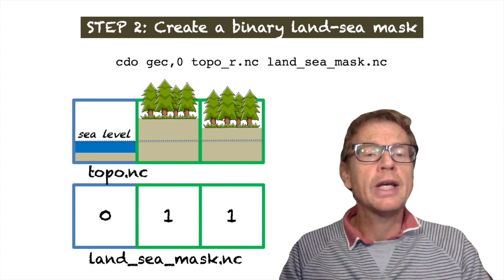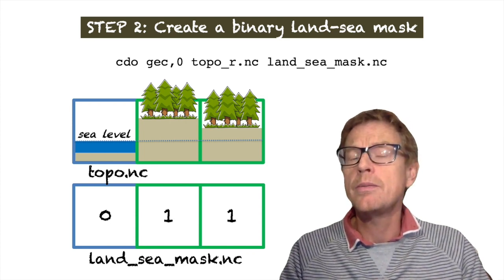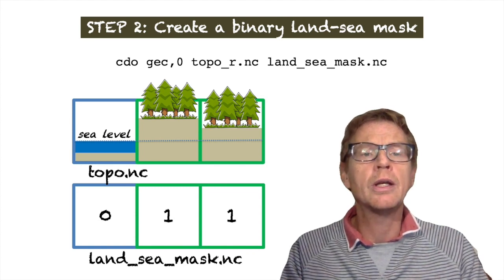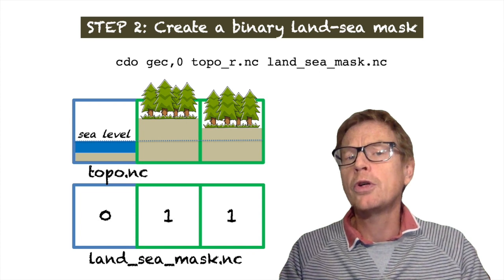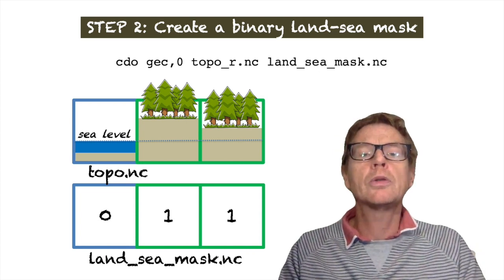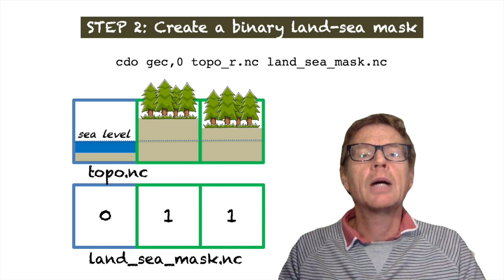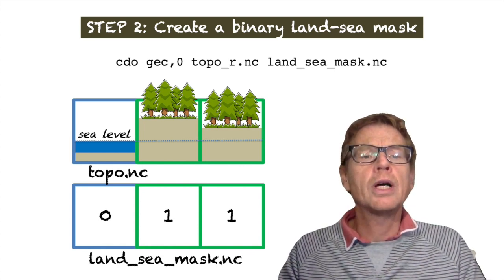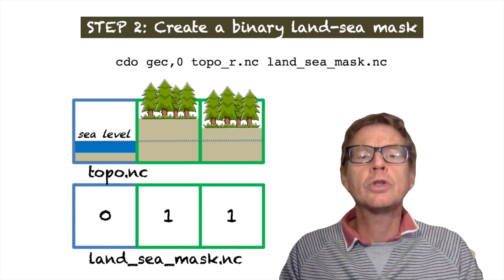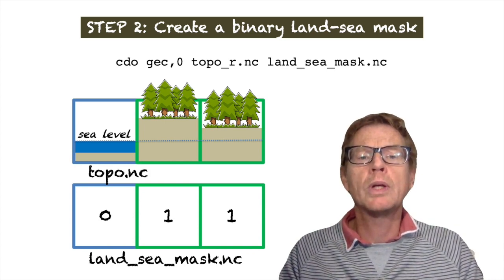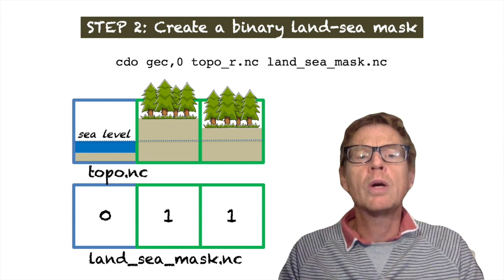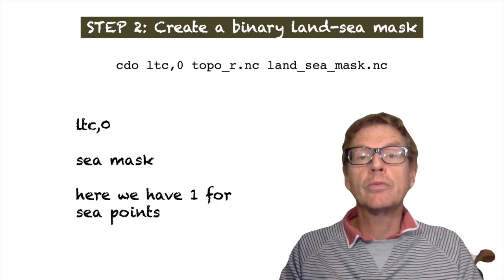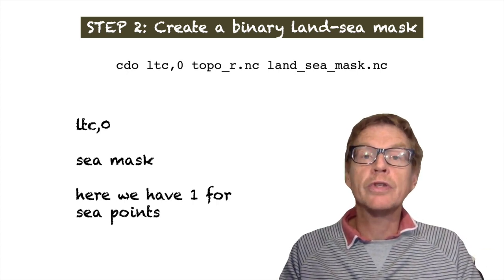Now what we need to do then is we need to convert this into a mask. And we can do that using the logical commands that we've also seen in a previous video. So we take the topographical file and we use the logical command greater than or equal to a constant. And we provide the argument zero. So what does this do? In the output file it makes a mask where wherever the topographical height is above sea level, we will end up with a one. And where we're below sea level, we end up with a zero. We can also use less than or equal to a constant to make a mask which has ones for the ocean points.